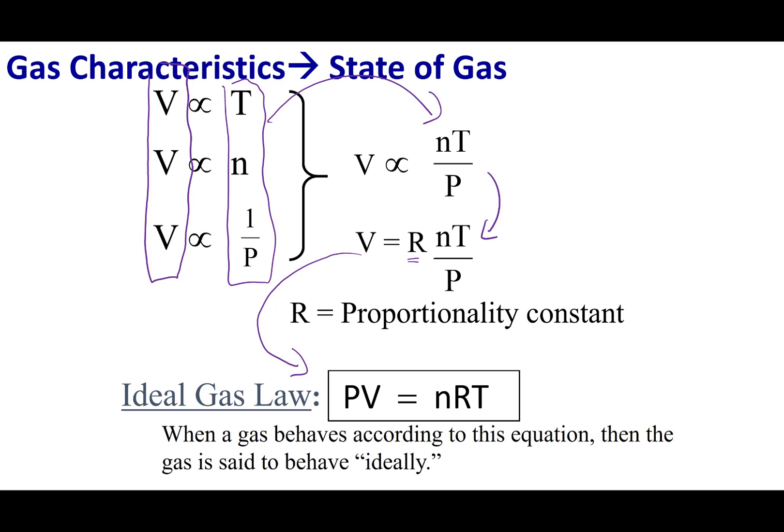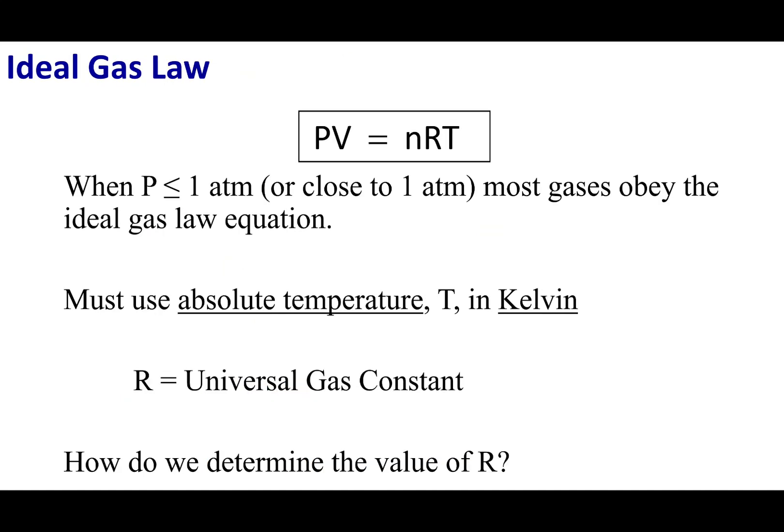This is the combined gas law, or the ideal gas law. This equation encompasses everything that Charles, Boyle, and Avogadro did. You don't have to use any one of their equations. You can always use this equation, and it'll evaluate a gas going from one state to another. Most gases are going to follow this equation because most of them behave ideally when they're close to about one atm or less. When you use this equation, make sure you put temperature in Kelvin, and we have to evaluate R, the universal gas constant.